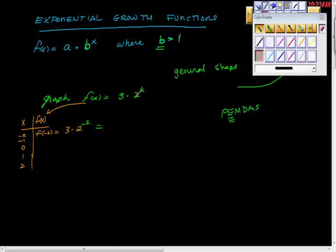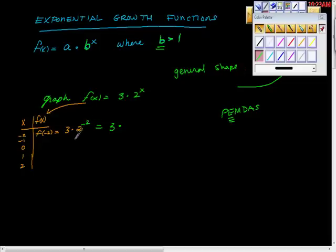Someone might say, why not just do 3 times 2 and then take 6 to the power of x? Try that and see if you get the same answers — you will not. No multiplication before exponents. And here's maybe the best thing you'll learn today: negative exponents don't cause negative numbers, negative exponents cause fractions.